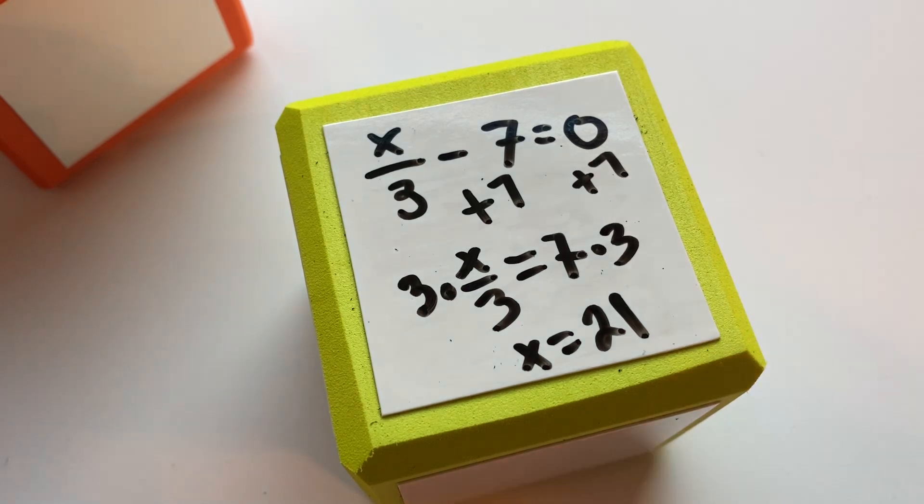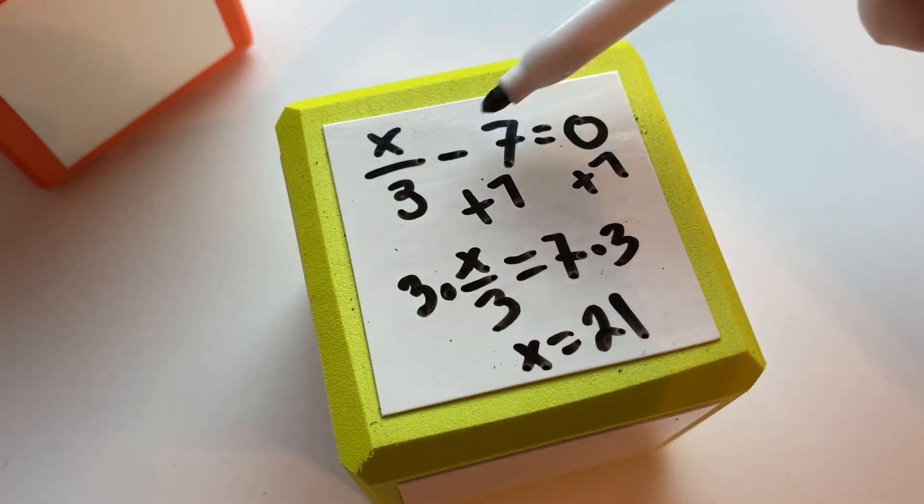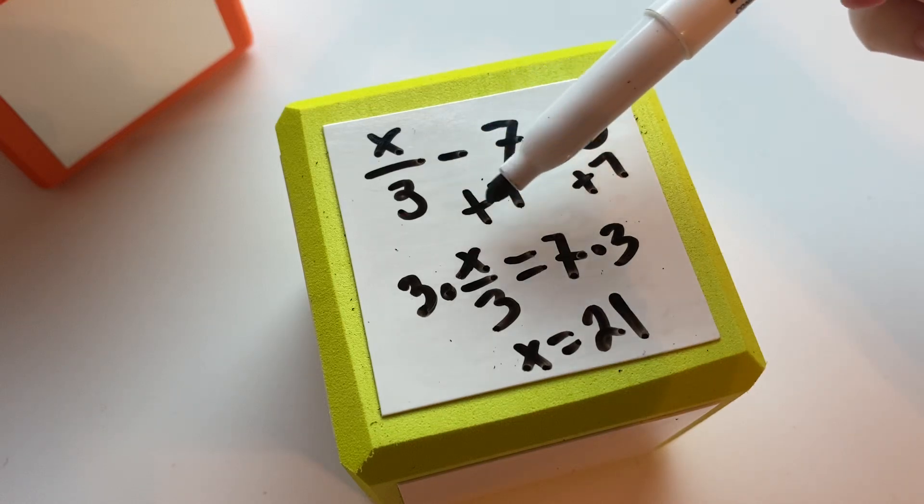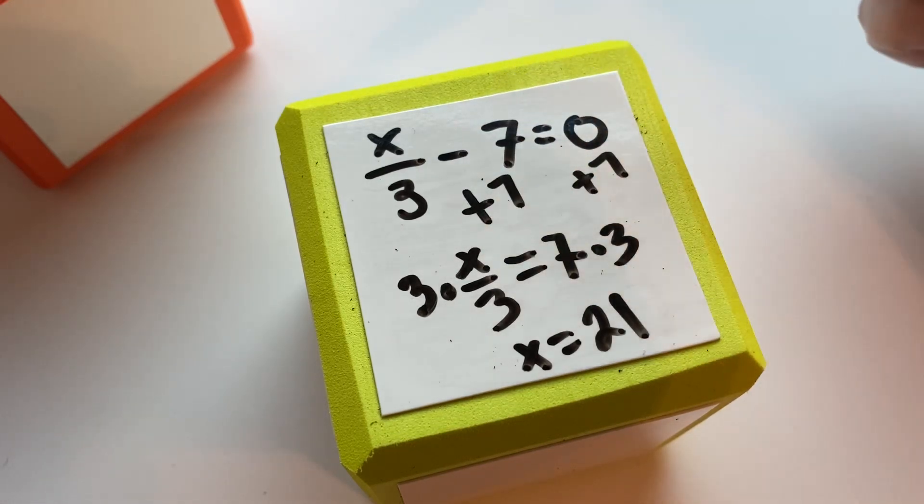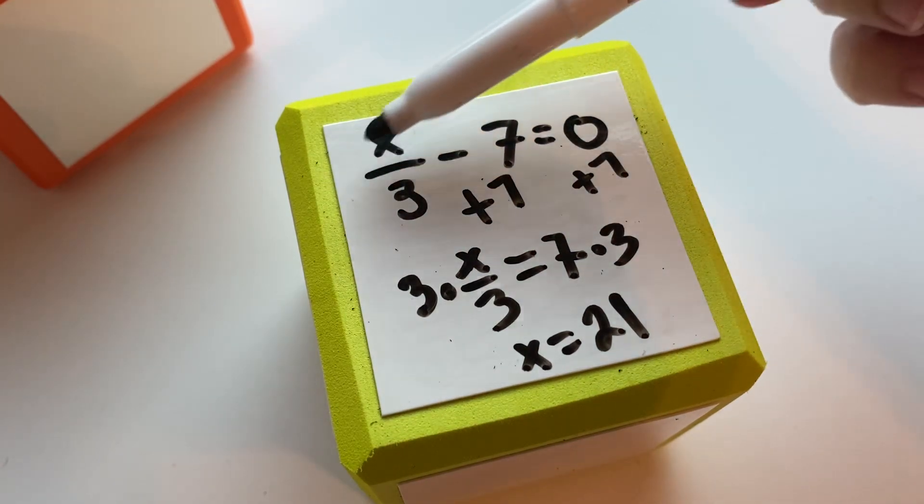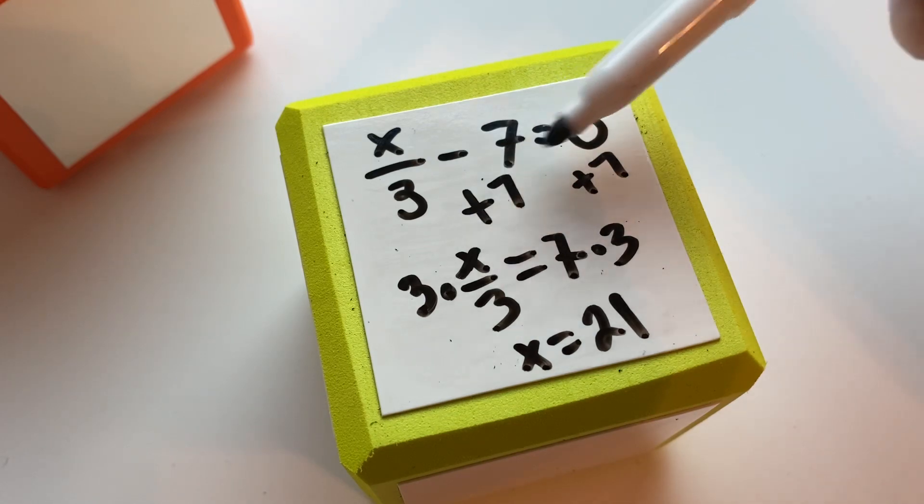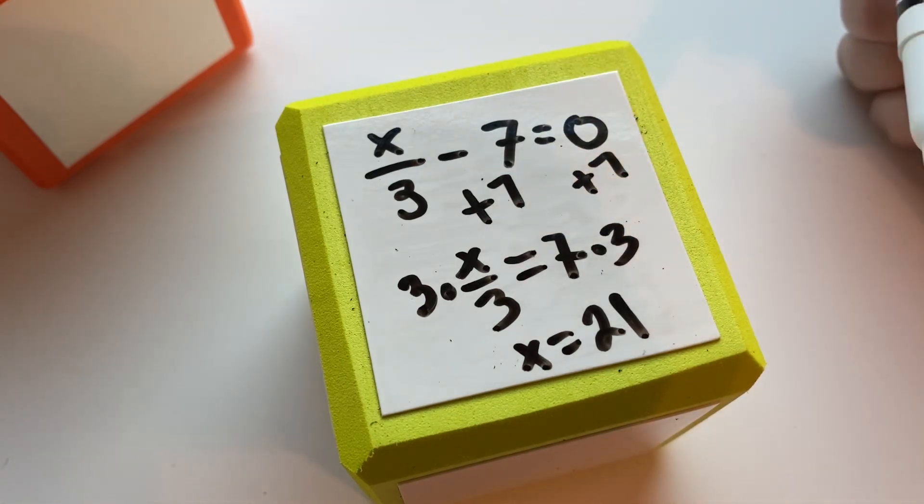So just remember, I just want to emphasize here so that you know what you're doing and you're not just being a robot following steps. We do the inverse operation because it eliminates things from one side. We're trying to get x isolated by itself. And as long as you do something to both sides, it will keep the equation balanced.